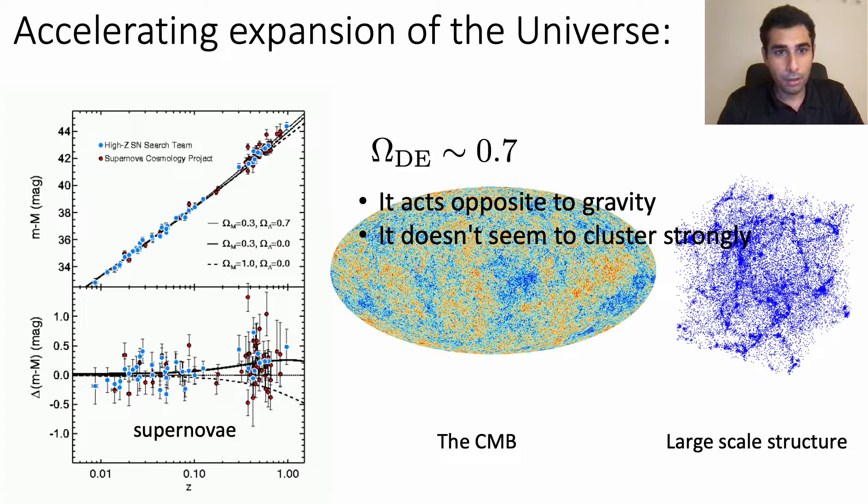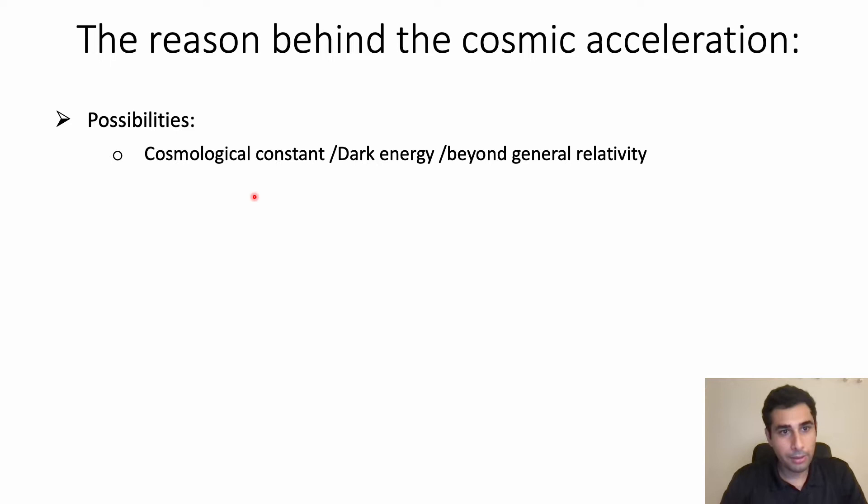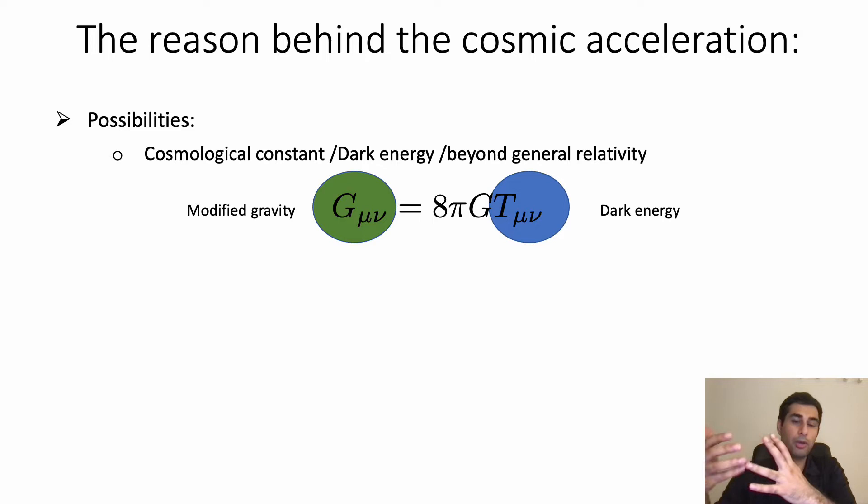And one of the main questions today we have in cosmology is regarding the nature of cosmic acceleration. The possibilities cosmologists have come up with are either by considering cosmological constant which is nowadays a standard theory, or by changing the right-hand side of Einstein's equations by considering a new component which we call dark energy, or by changing the left-hand side and going beyond general relativity.